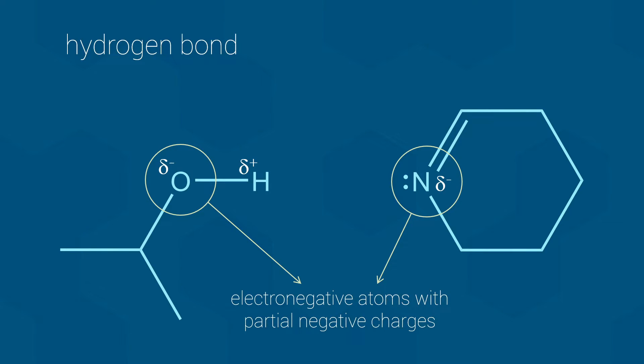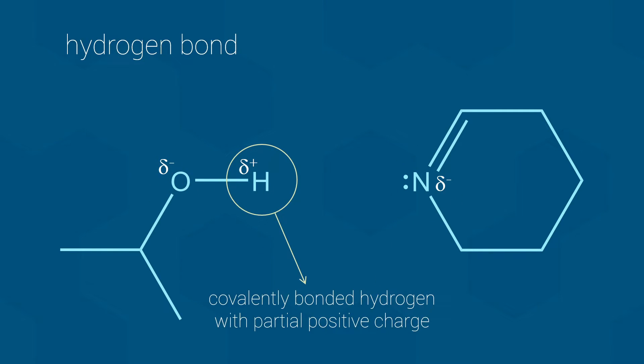What is different is that one of the two electronegative atoms has a single covalent bond to a hydrogen atom. Due to the difference in electronegativity, this hydrogen atom will have a partial positive charge and the bond has a permanent dipole.